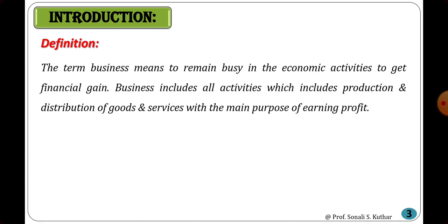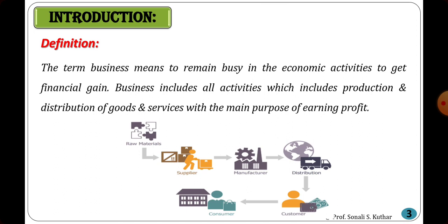The main purpose of business is to earn money and profit. These activities include production of new goods, transportation of produced goods up to the consumers by using a wholesale store or retail store. As shown in the picture, raw materials supplied by the supplier are used in the manufacturing unit for conversion into final products, which are then distributed through wholesalers, retailers, and distributors up to the consumers.